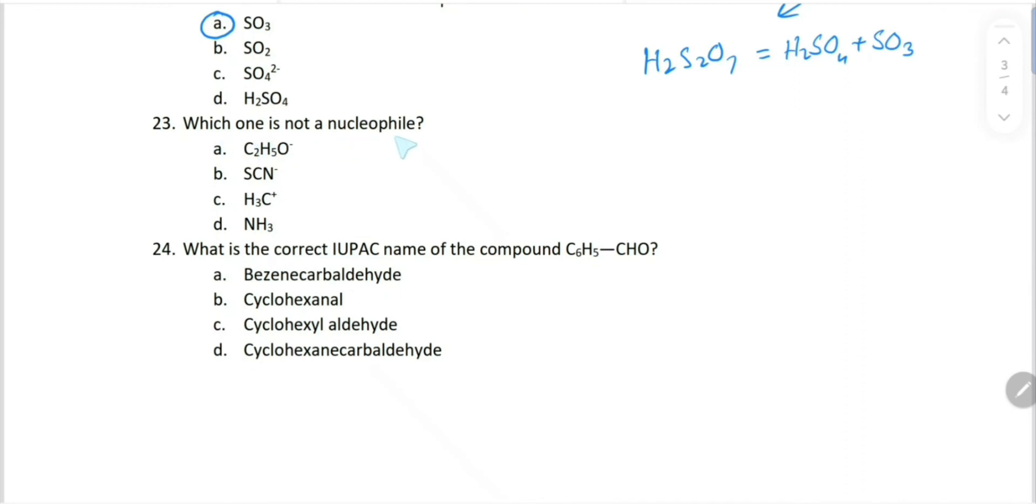Which one is not a nucleophile? A nucleophile has a negative charge or is electron-rich. You can see ethoxide, choice A, has negative charge, so it's a nucleophile. Thiocyanide is a nucleophile. But methylcarbonium ion has a positive charge - it is an electrophile, so it is not a nucleophile. NH3 has a lone pair with nitrogen, so it is a nucleophile too. So choice is choice C.